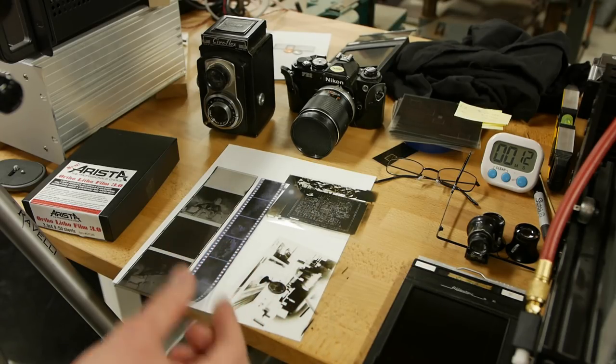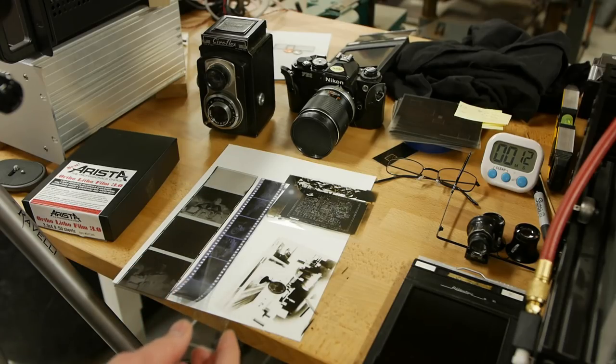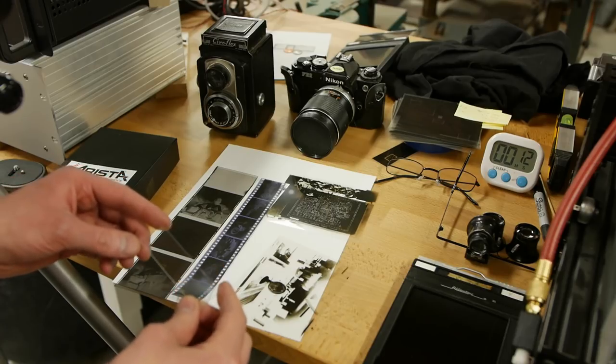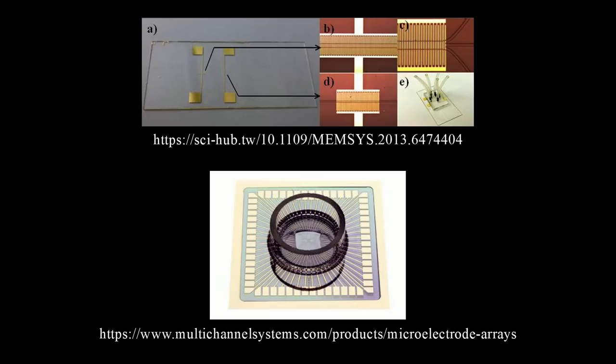This is for a project for another YouTube channel, the Thought Emporium. The goal is to make a micro electrode array on this glass microscope slide, and it will be interfacing with neurons. Basically, we want to have electrodes on the outside with wiring that go to a little tiny micro electrode array at the middle.